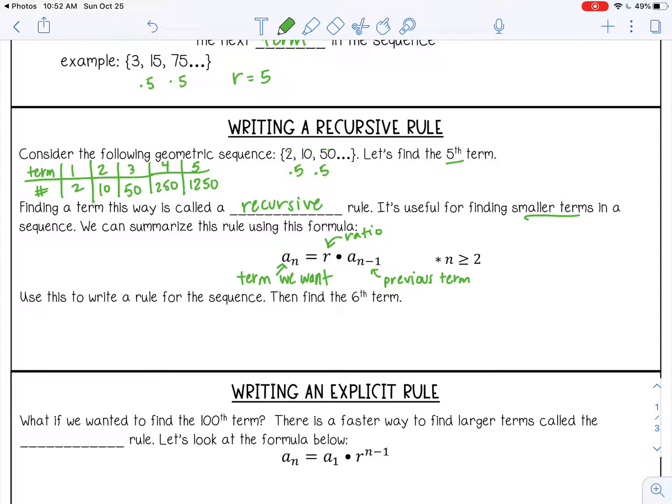Okay, so use this rule to write a rule for the sequence, and then we're going to find the sixth term. So the rule would be a_n equals, our ratio is 5, times a_(n-1). So if we want to find the sixth term, a_6, we're going to multiply 5 times the fifth term. So here's our fifth term, 1250, times 5. That's going to give us 6,250.